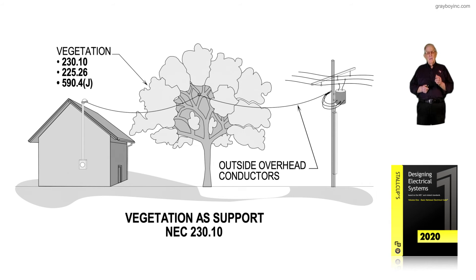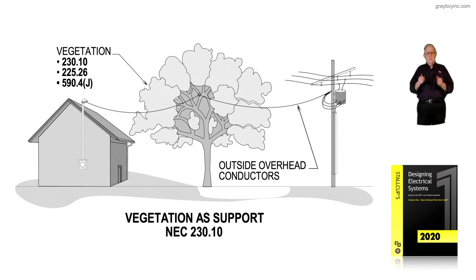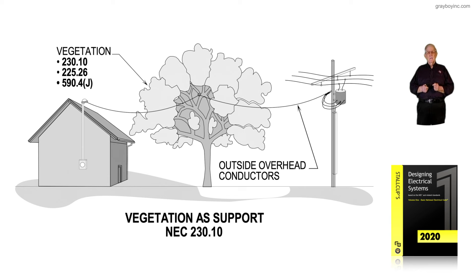They came back in and corrected that, changing it to just 'vegetation' as support. So anything where wind can blow the trees, the limbs and so forth, and stretch that wire, maybe pop it and break it — they said no, vegetation just can't be used at all. You need to set another utility pole and support those overhead conductors right.